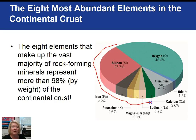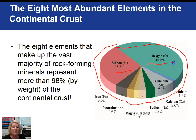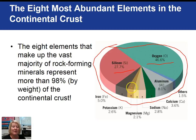This pie chart shows the eight most abundant elements in the Earth's continental crust. Silicon and oxygen are the two most abundant, so as a result we have a lot of minerals with silicon and oxygen in them. The other major elements are potassium, magnesium, sodium, calcium, aluminum, and then some miscellaneous elements.